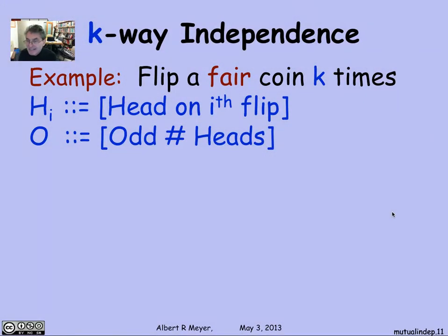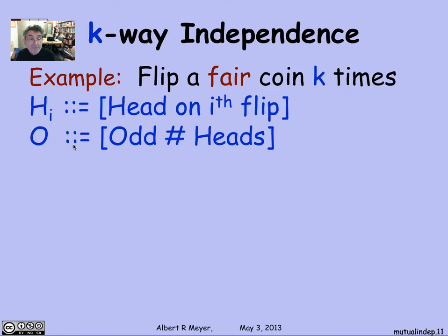That leads us to the general idea of k-way independence. If you flip a fair coin k times, let Hi be whether there's a head on the i-th flip, and let O be whether there are an odd number of heads. By the same argument, you can verify that any set of k of these events are mutually independent. But if you take all k+1 of them, they are not independent — any k of them will determine the k+1-st one.